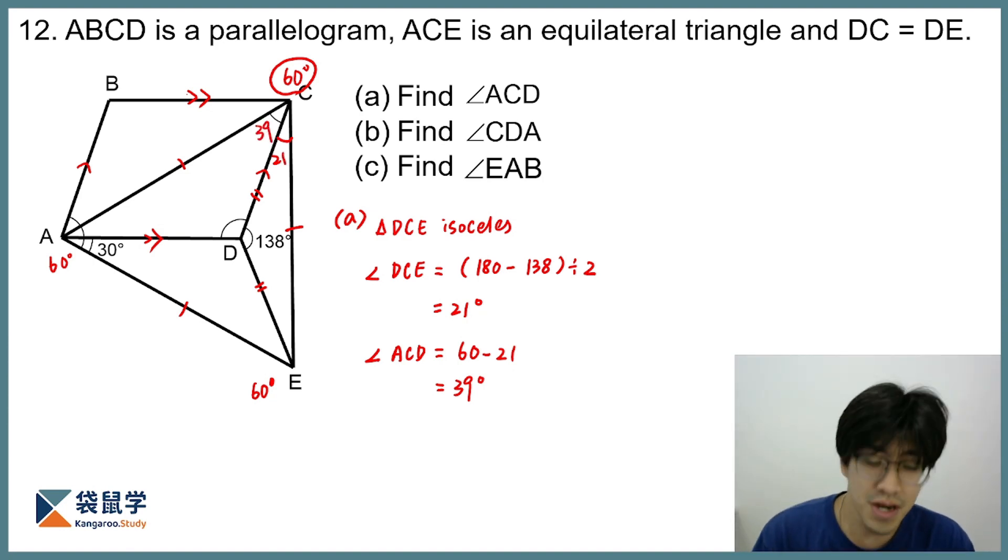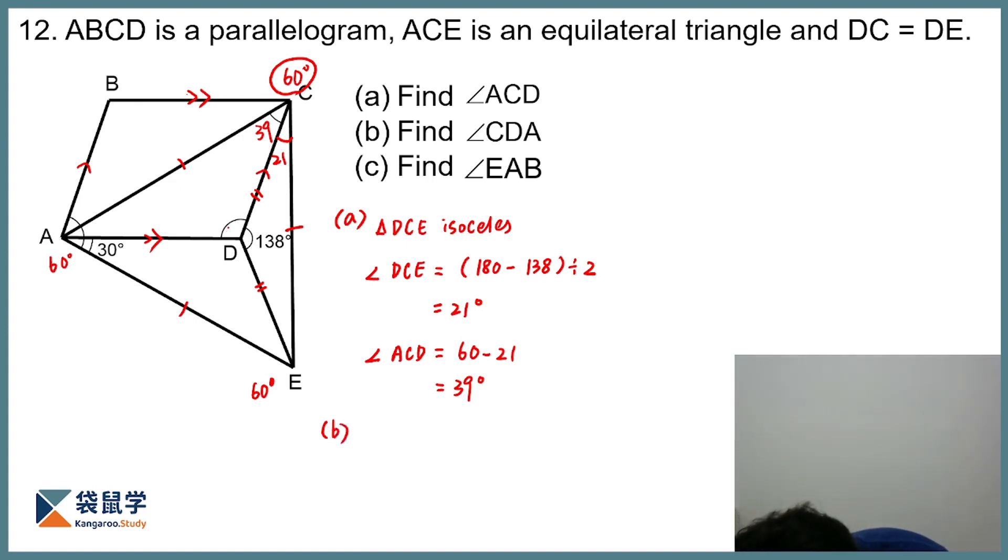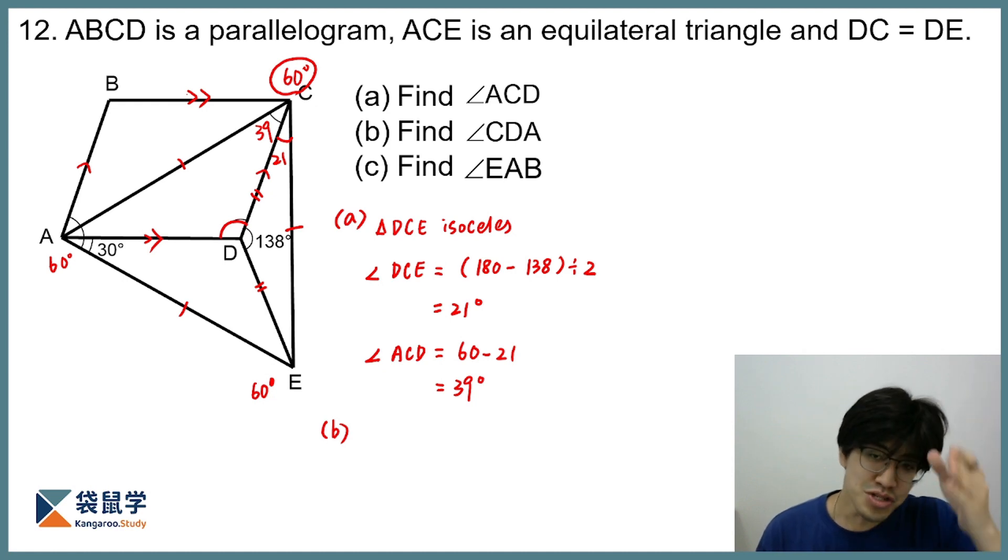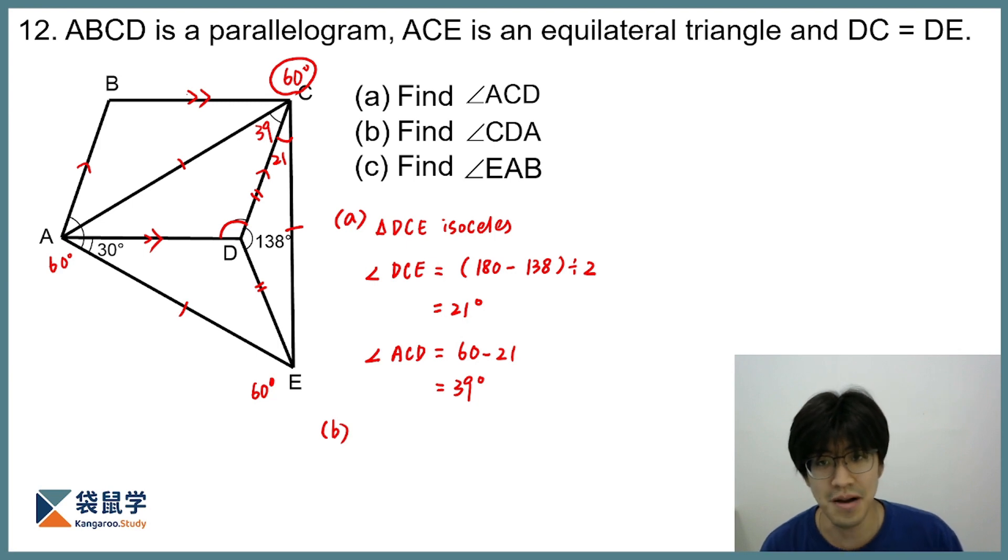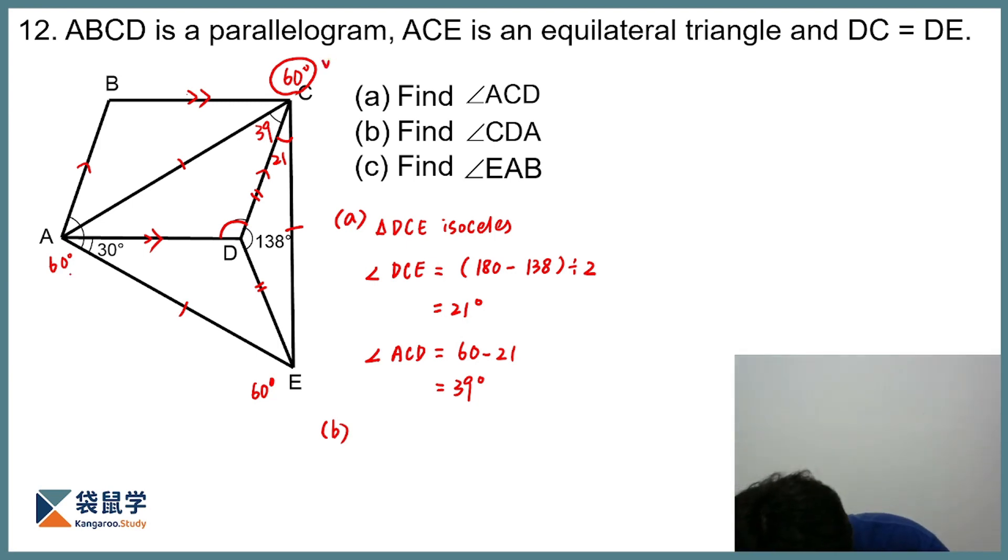Now how can I find out part B? The angle CDA, which is over here. Let's see again, let's see what are some of the known information that we have applied. Well, isosceles triangle, we already make use of that. What about equilateral triangle? Equilateral triangle tells me that not only this angle over here is 60, this angle over here is also 60, meaning that what angle is this?